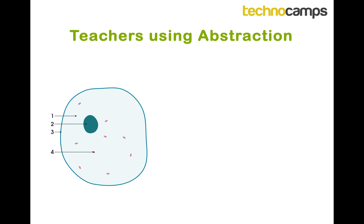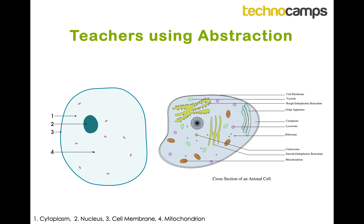For example, teachers use abstraction as I mentioned. The image on the right is what you'll see when learning animal cells in A-level or a bachelor's degree. What you need to know so far at GCSE is only a simplified version of it.